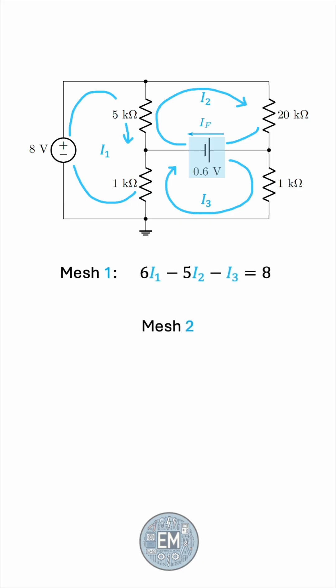For the second mesh, we'll also use the inspection method. We have a total of 25 kOhms within the second mesh, but we have 5 kOhms in common with the first mesh, so we'll subtract 5I1. Do we have anything in common with the third mesh? No, but we have the 0.6 volt source, which is resembling the diode, basically. We're going through this battery from positive to negative, so we'll put plus 0.6. Again, we'll take the constant to the other side, and we have our second equation.